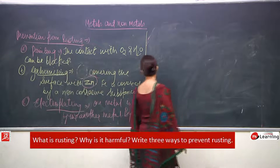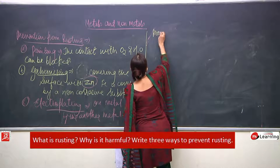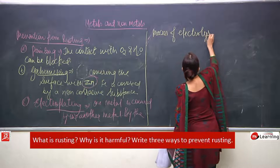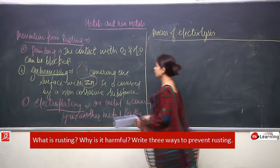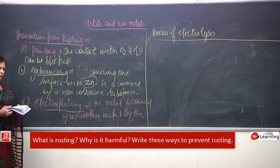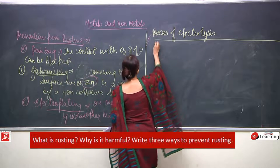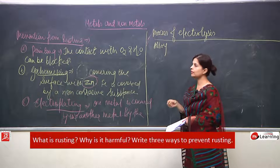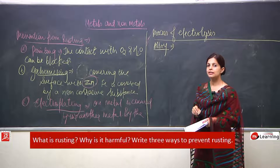One metal is covered by another metal by the process of electrolysis. We have discussed three methods to prevent rusting. Now the fourth one can be alloy.